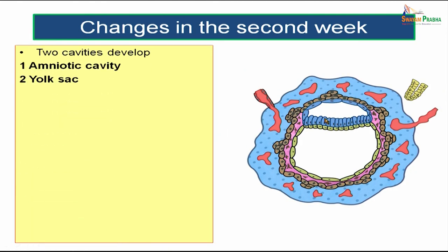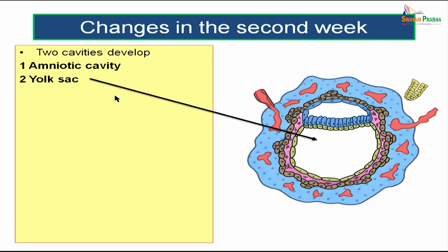There are mainly two cavities formed. As the embryoblast gets separated from the trophoblast, a cavity forms above — the amniotic cavity — and the exocelomic cavity lying below the hypoblast, which you call the yolk sac. So this is the amniotic cavity above, and the yolk sac below.